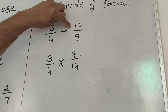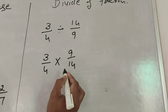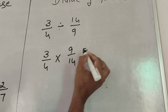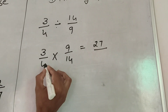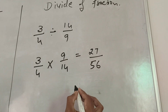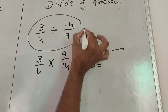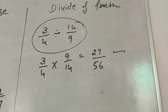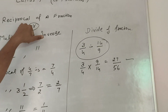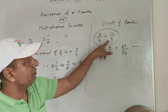Then we divide the fraction by multiplying: 3 multiplied by 9 is 27, and 7 multiplied by 14 is 98. Wait — 3 by 9 is 27, and 14 by 4 is 56. This is the quotient of this fraction. So, we use reciprocal of fractions and multiplicative inverse in division of a fraction. Thank you.